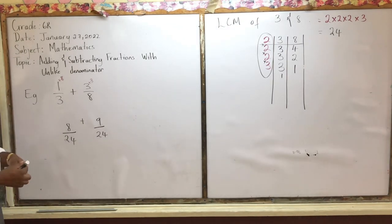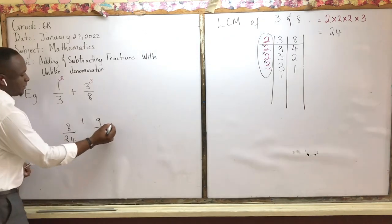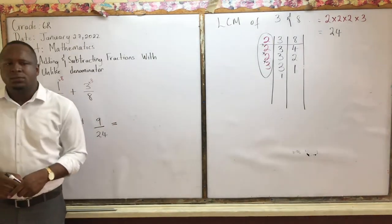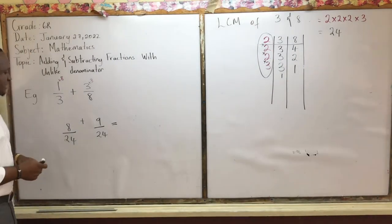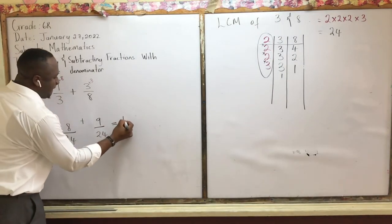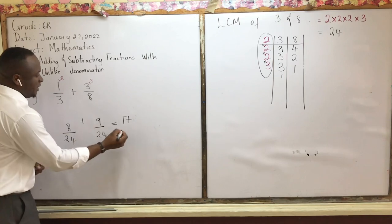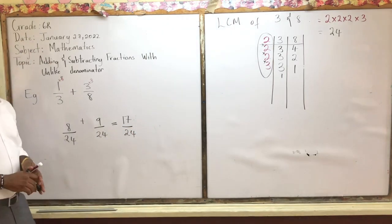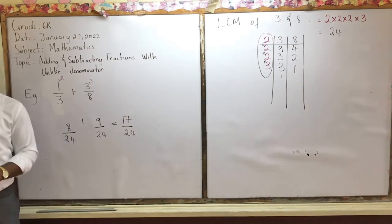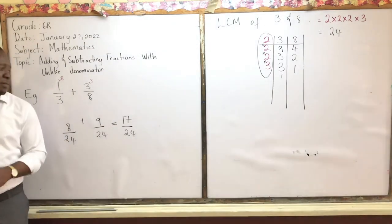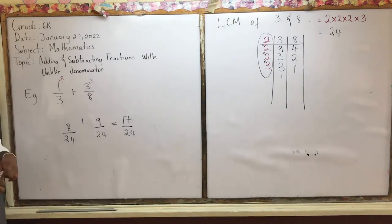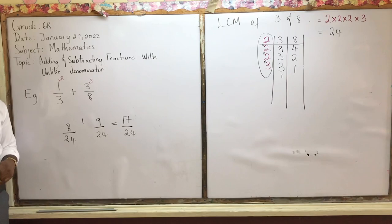Now we go ahead and add the numerators. Eight plus nine is 17, and the denominator stays 24. So the answer is 17 over 24. And there you have it — adding fractions with unlike denominators by finding the LCM.